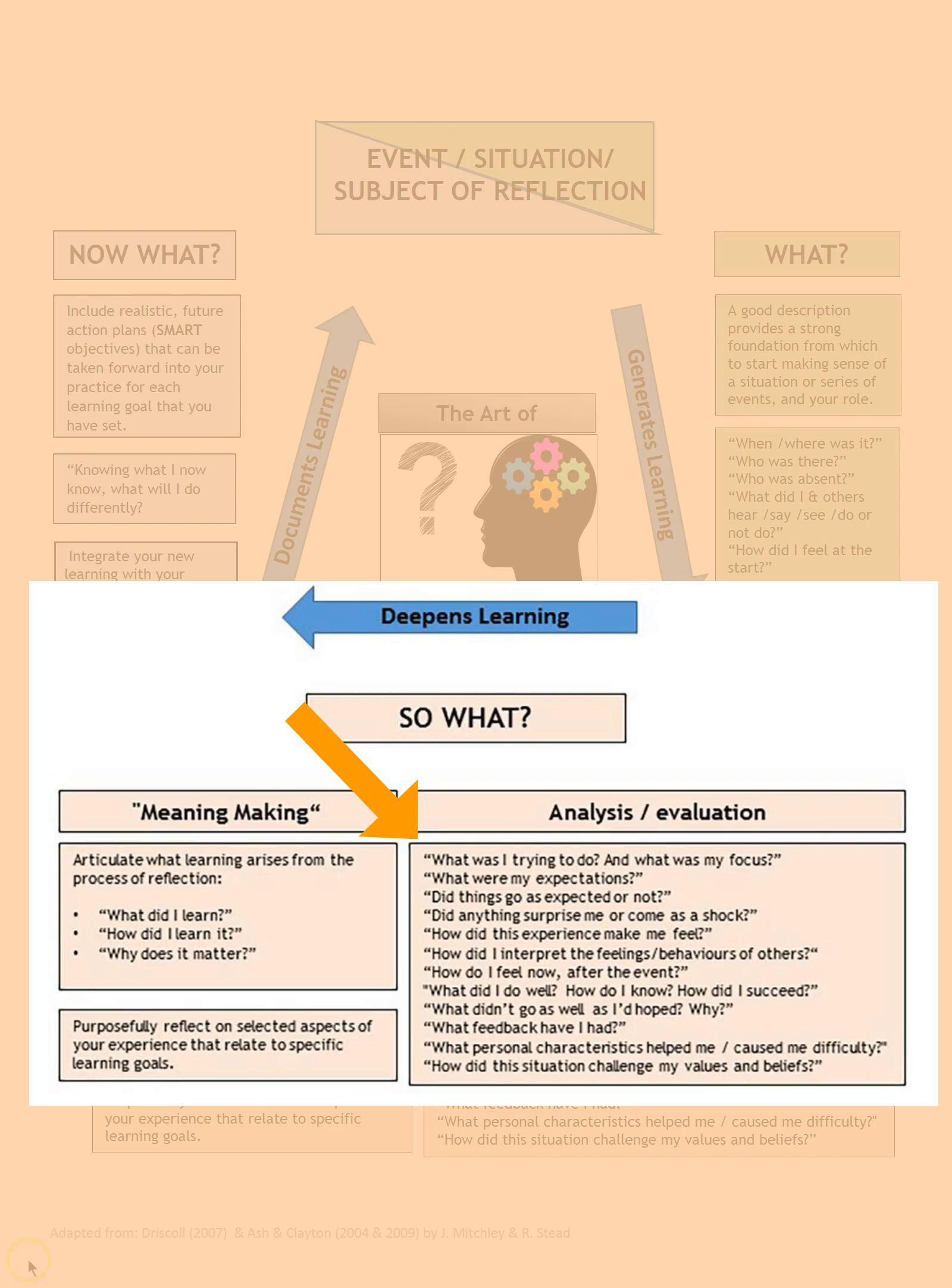So ask yourself what did I do well? But not only what I did well but how I know that I did things well. How did I succeed? Also then we need to think about what didn't go so well. So what didn't go as well as you'd hoped it would go and why do you think that was? So it's important to also think about any feedback that you may have had. That could have been during the event, that could have been during verbal feedback or it could be feedback you've had since and that feedback can come from any source.